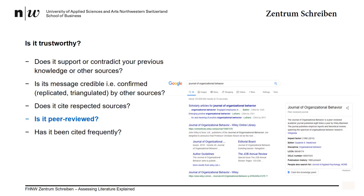This is different from blogs, dot-coms, and even newspapers. Anyone can create or purchase a dot-com address and write whatever they want — that's the beauty of freedom of speech. Depending on the newspaper, they should be more reliable; however, they can still be biased, as they are edited in-house rather than being peer-reviewed by a third party as is the case in academic journals.